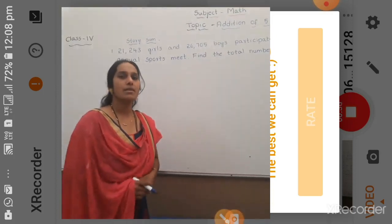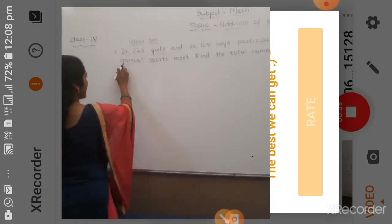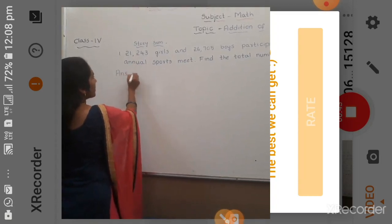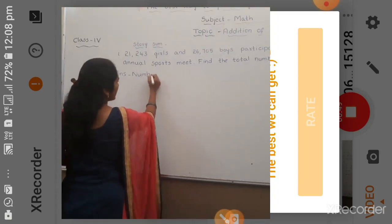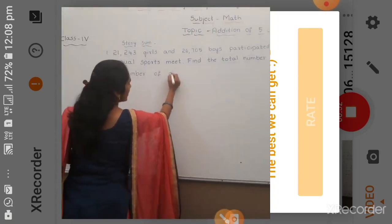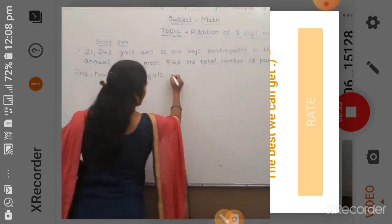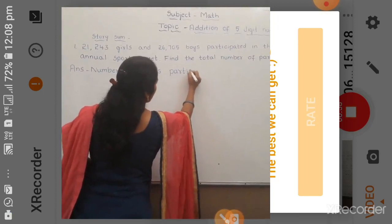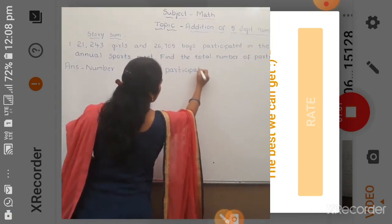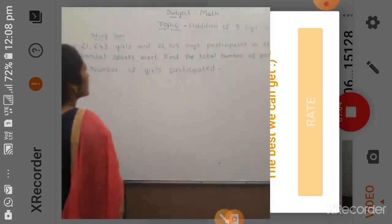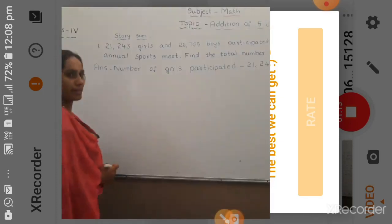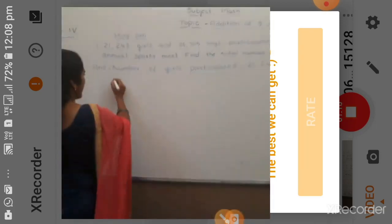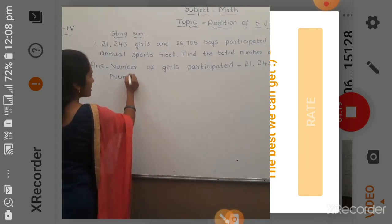So let us see how to solve this story sum. First we will write the statements. The first statement is: number of girls participated — that is 21,243.